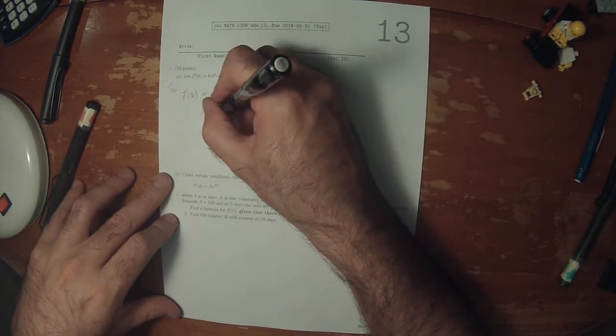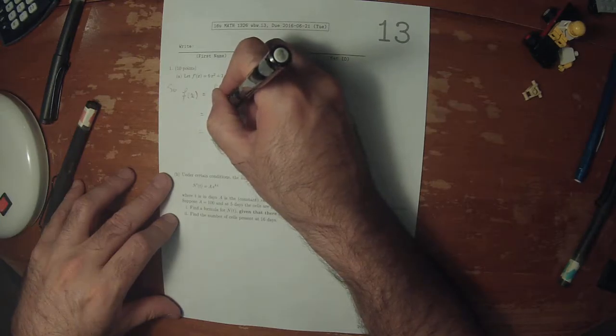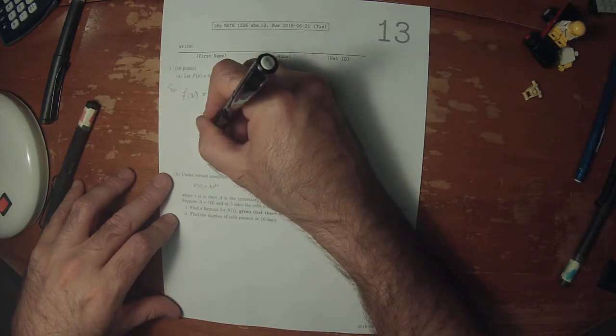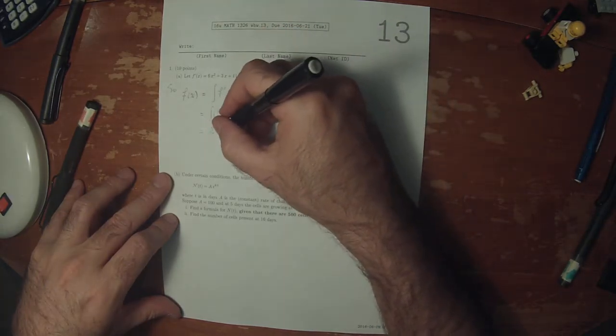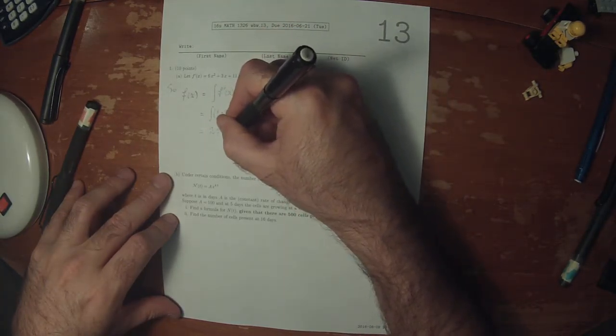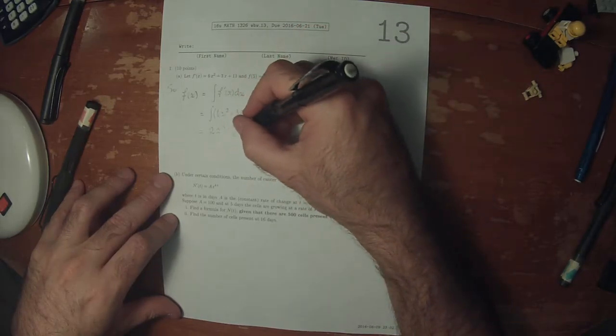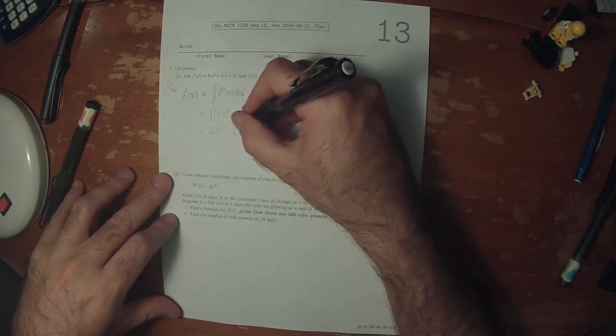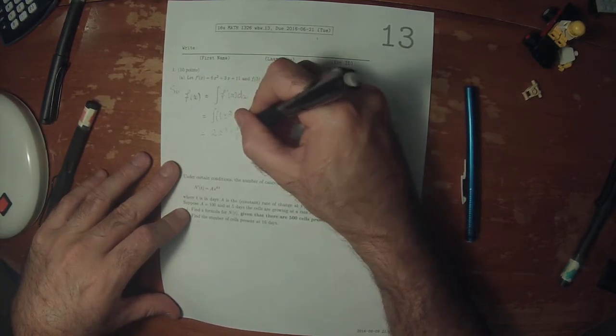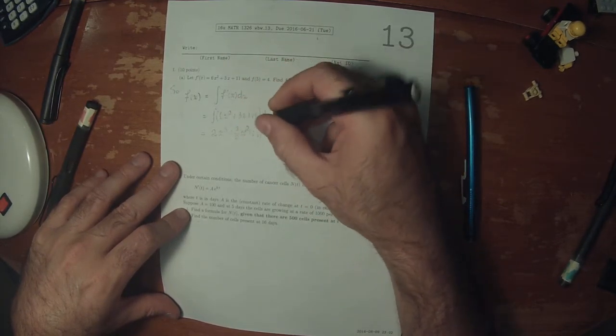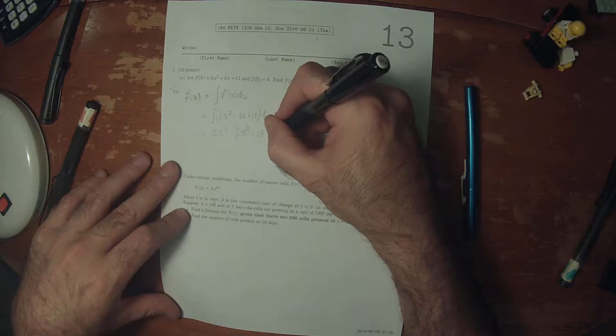is 6x cubed over 3. So that would be 2x cubed, and then plus 3 halves x squared plus 11x plus some unknown constant.